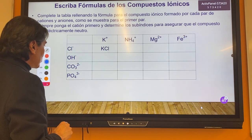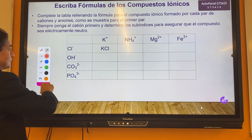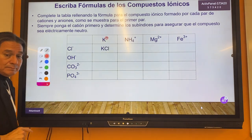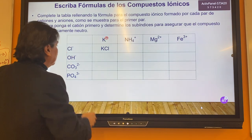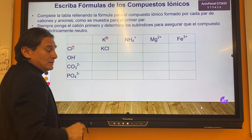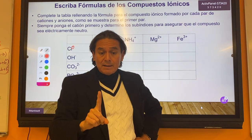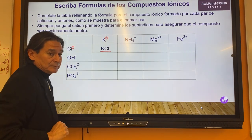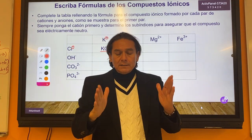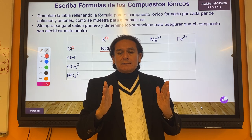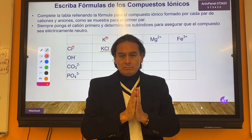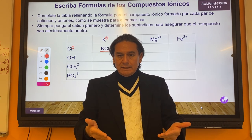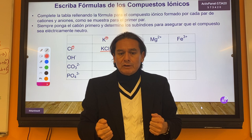They did the first one for us. Potassium has one electron to donate. Chlorine has one electron to accept and it forms a neutral compound. When a metal and a non-metal mix in a one-to-one ratio, the subscripts are not written down as a convention.